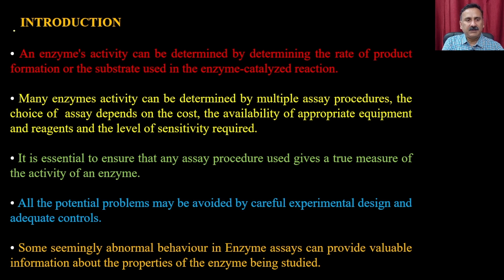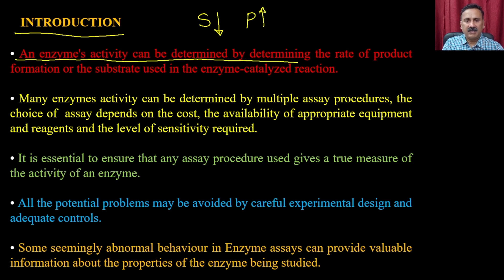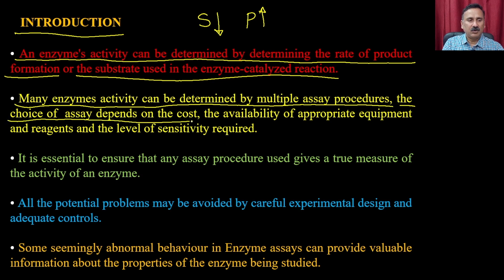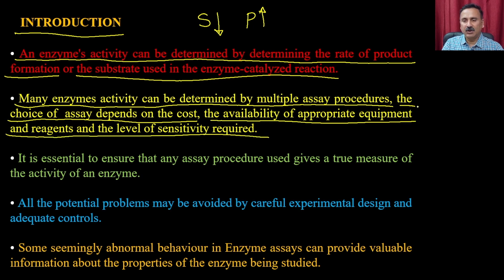The enzyme assay is an assay where you measure either the depletion of substrate or the generation of product. Enzyme activity can be determined by measuring the rate of product formation or substrate used in enzyme-catalyzed reactions. Many enzyme activities can be determined by multiple assay procedures. The choice of assay depends on the cost, the availability of appropriate equipment and reagents, and the level of sensitivity required.